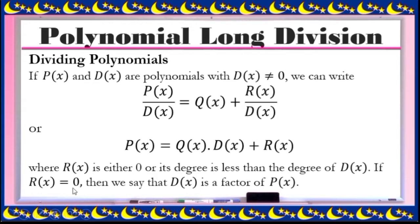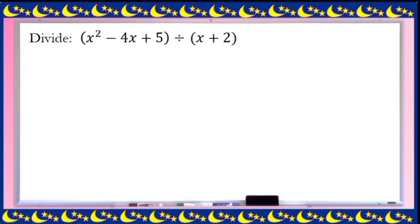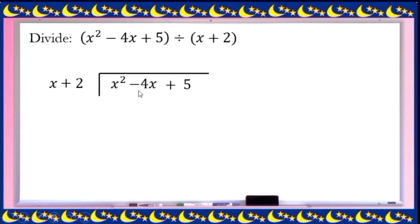If r(x) is equal to 0, meaning our remainder is 0, then we can say that the divisor d(x) is a factor of the dividend p(x). Let's have this example: divide x squared minus 4x plus 5 by x plus 2. So our dividend is x squared minus 4x plus 5, placed inside the division symbol, and the divisor x plus 2 on the left side.